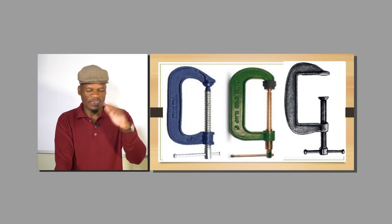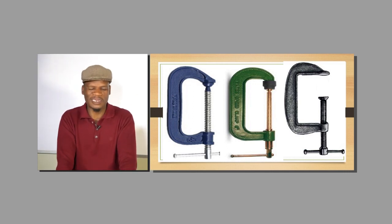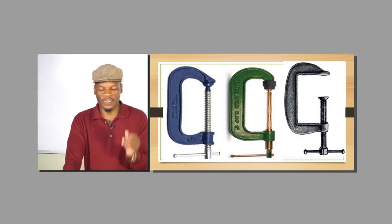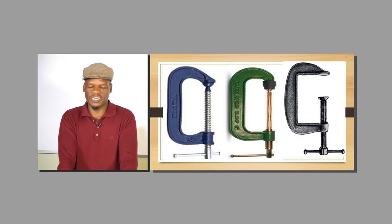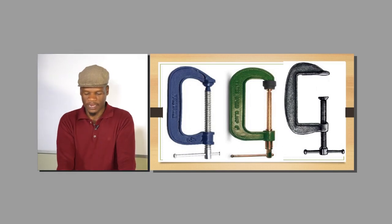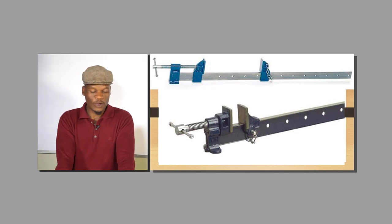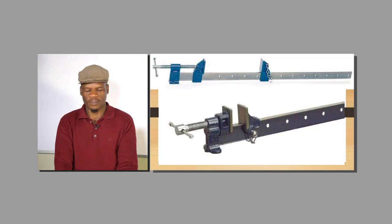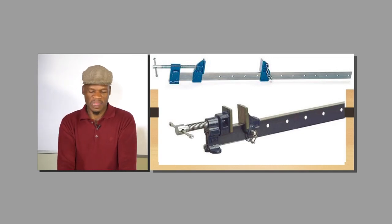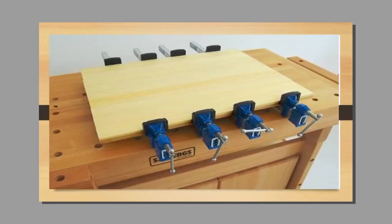You have got your G-clamp, which takes the shape of a G — easy to remember just by looking at the shape. Then you have got the long clamp. Both the G-clamp and the long clamp are used to clamp material when you are going to glue them together or to hold two pieces together so you can work nicely. For example, to glue boards together you apply the glue then clamp them with the long clamp.